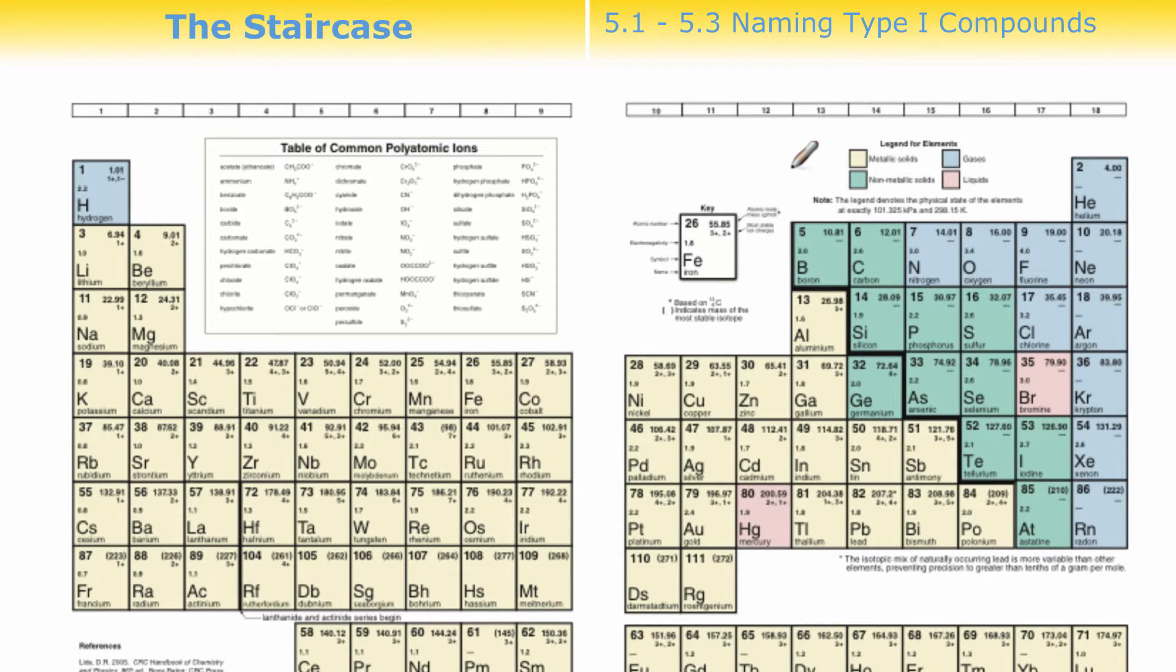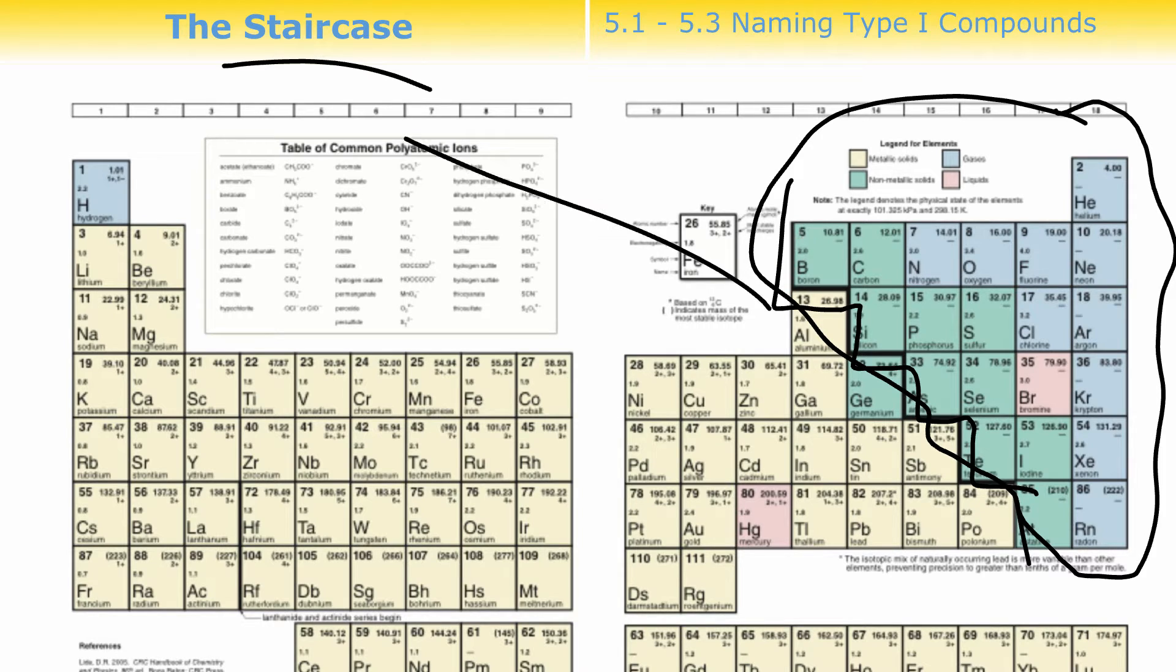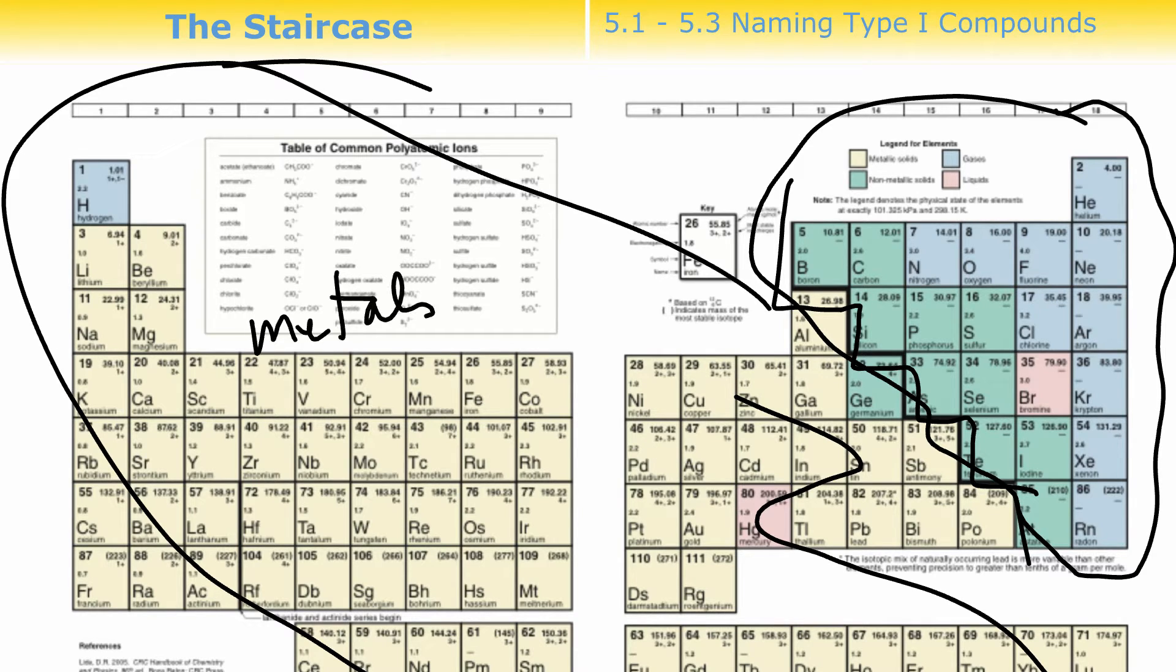Now, one of the guiding things that we use to identify what type of compound we have is something called a staircase. If you look at any periodic table, typically they have this staircase that separates two sides. And it's really an unfair thing because there's this one little corner up here of non-metals and then the rest of this stuff, most of it over here, are metals. So the staircase is really something that helps us define what type of compound we have.